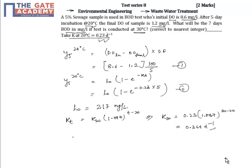Y7 at 30°C would be L0(1 - e^(-K30×T)). That is 217(1 - e^(-0.364×7)). Calculating, we get the answer to be 200 mg/L.